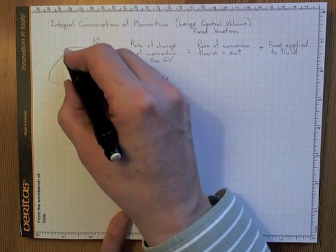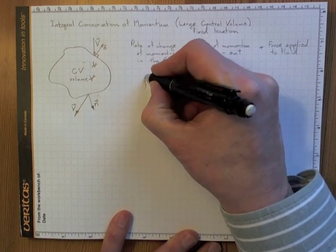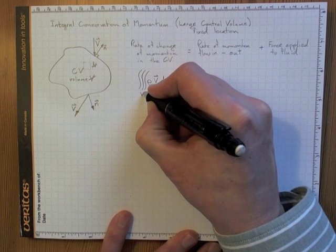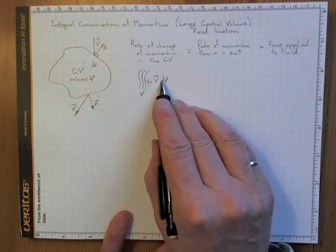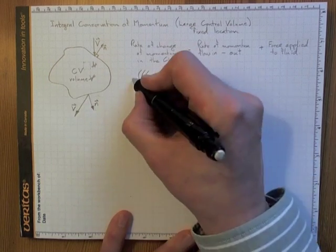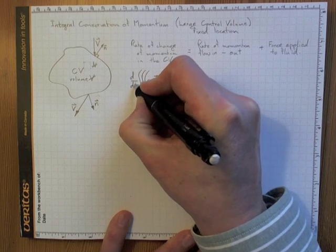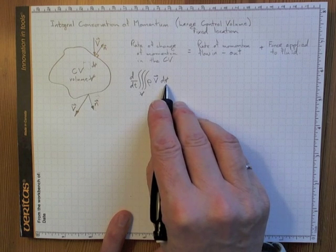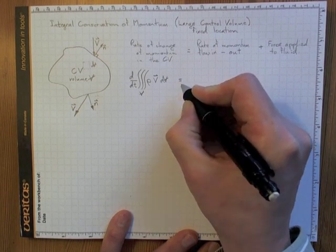To find the total momentum for the whole control volume, we integrate over the entire volume — a triple integral over the volume. We're interested in how quickly this is changing, so it becomes a time derivative: the rate of change with time of the total momentum in the control volume must equal the difference between what's going in and what's coming out.